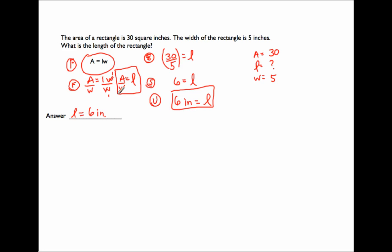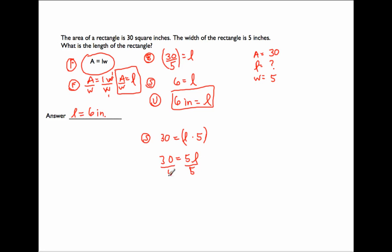You didn't have to do it that way. You could also use the original formula A equals LW. Substitute in: 30 equals L times 5, which gives 30 equals 5L. L is not by itself, so divide both sides by 5, and you get L equals 30 divided by 5, which is 6 again. Either way you do it, you get the answer of 6. I just like to make it simpler from the beginning.